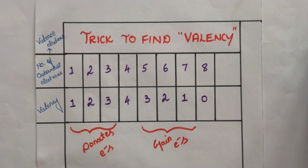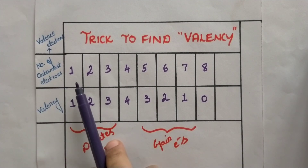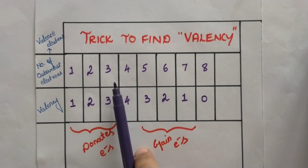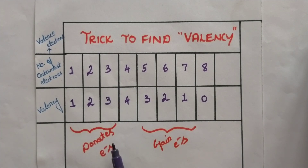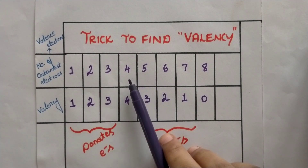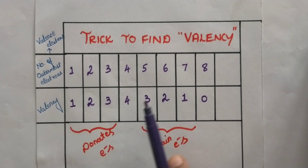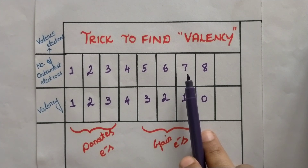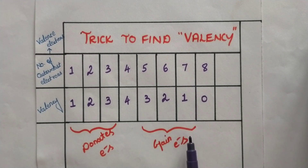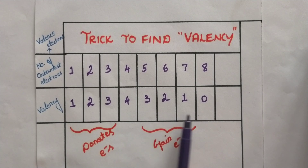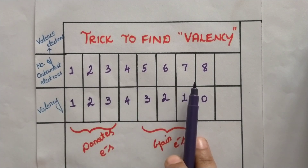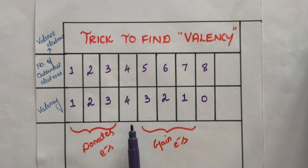To summarize: when the number of outermost electrons is 1, 2, or 3, the element can easily donate those electrons rather than gaining. When the number is 4, it can either donate or gain. When the number is 5, 6, or 7, it is easier for the element to gain electrons to acquire the octet configuration. This is the simple trick to identify valency based on the number of outermost electrons. Hope this was helpful — thank you for watching.